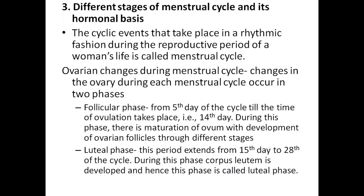Third question: different stages of the menstrual cycle and its hormonal basis. Cyclic events occurring in a rhythmic fashion during the reproductive period of a woman's life are called the menstrual cycle. The ovarian changes during the menstrual cycle occur in two phases.